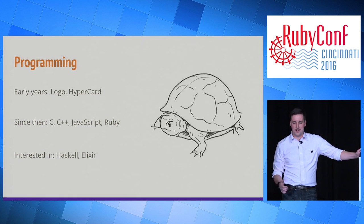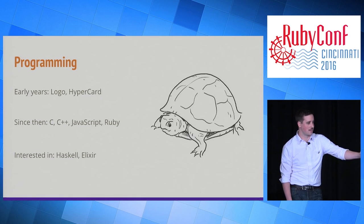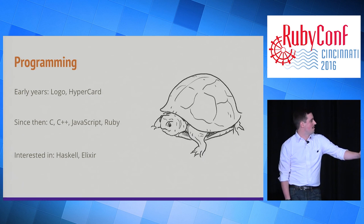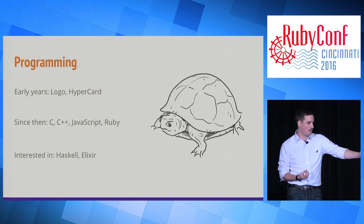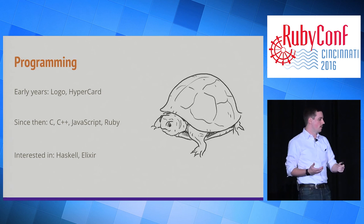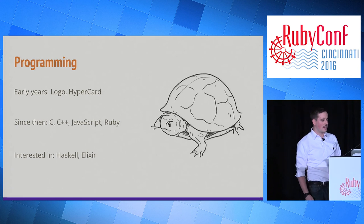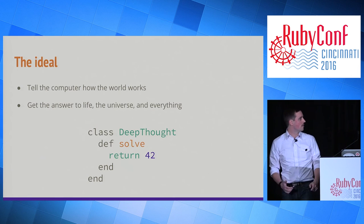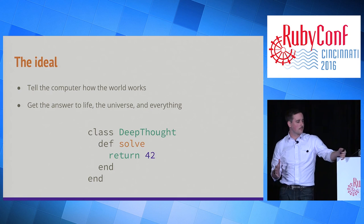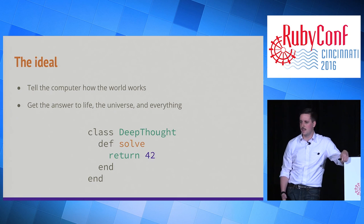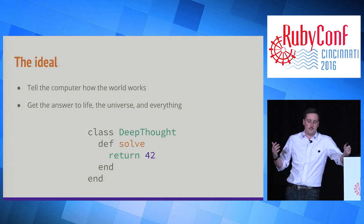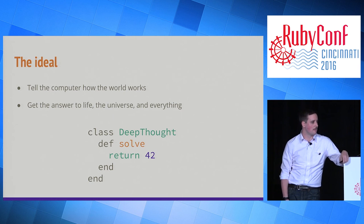My first programming language was Logo, and my first object-oriented programming language was HyperCard for the Mac. I've moved on to bigger and better things since then, mostly Ruby. Ruby is great because it allows us to express problems in clean and clear ways. One of the things that I feel inspired by, and one of the things that's held my interest in programming in general, is that I think of programming as a project where we sit down and say, 'Hey computer, here's what's going on,' and we get to get what we need out of it — the answer that we want, hopefully the answers to all of our problems.